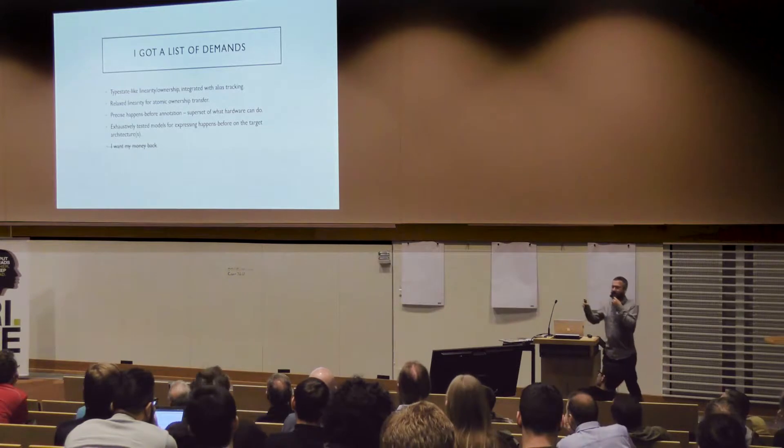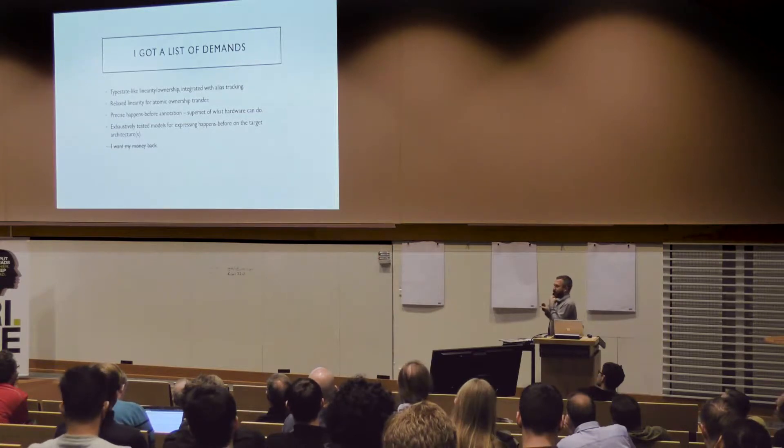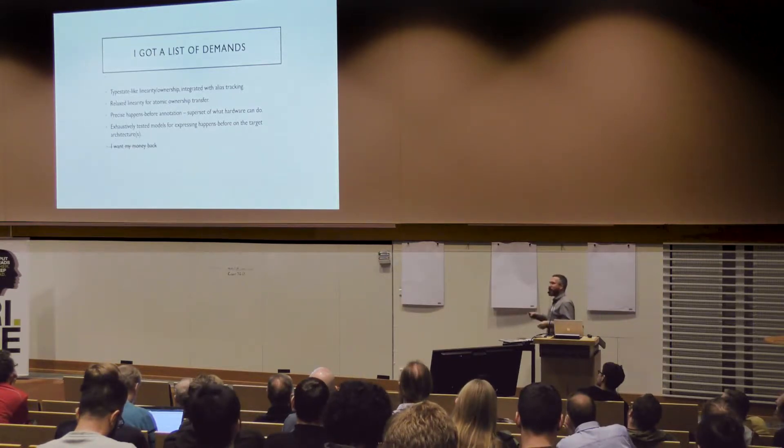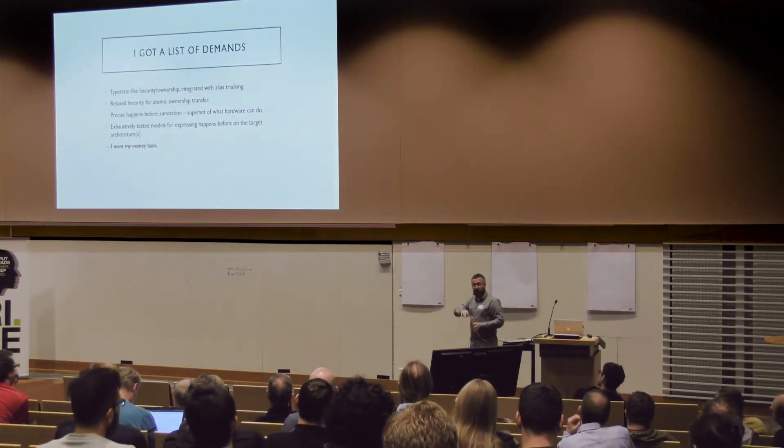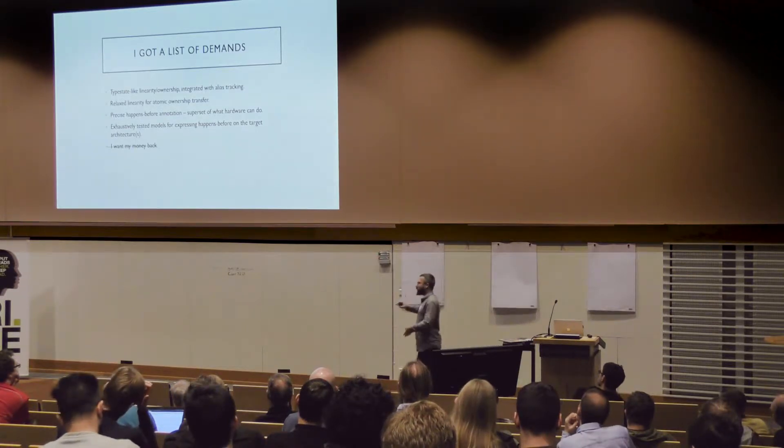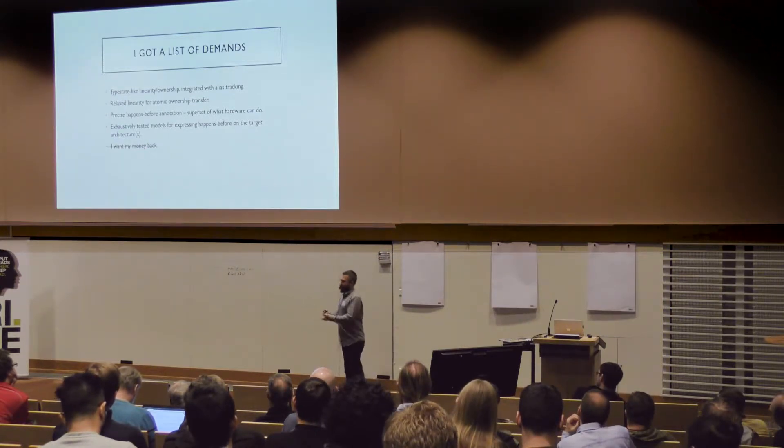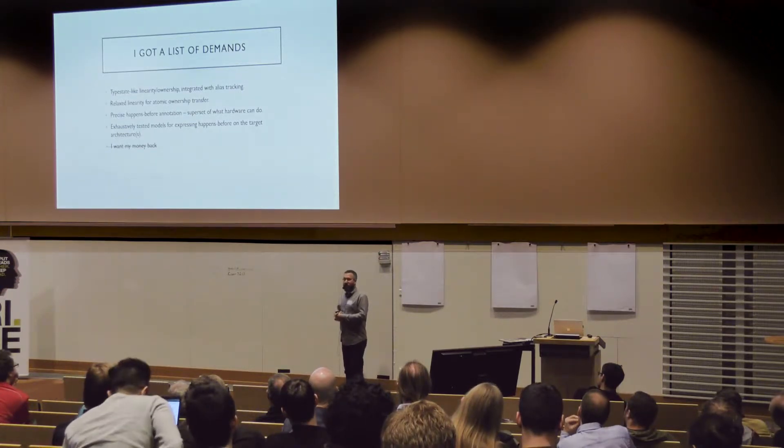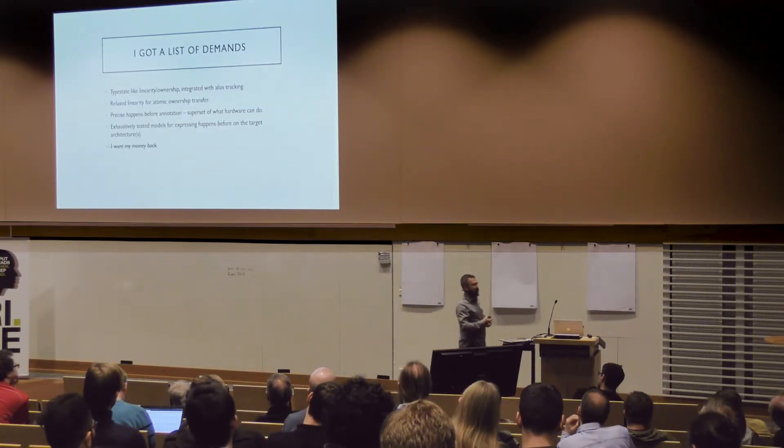The first is type state-like linearity and ownership. That has to be integrated with some concept of alias tracking. You don't have any choice on that. You have to have that. And by type state, I mean to say that some memory location does not have a type in the static sense. It has a type at a point in time. It has a temporal type. And that type can change over time. And importantly, that type has to change in some understandable way that you can reason about. Now, you can go all the way and say, well, I really want to reason about it. And so I'm going to try and implement this using a formally verified language like F star. But there you run back into the original performance problems that we're going to try and think about a little bit here. So type state.